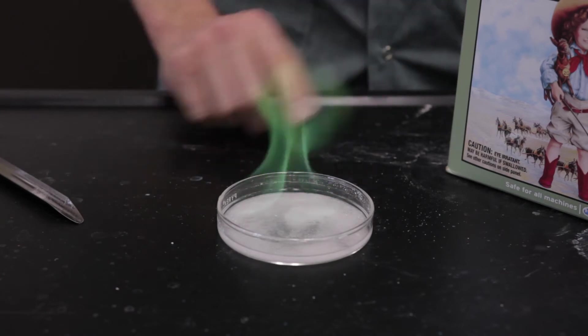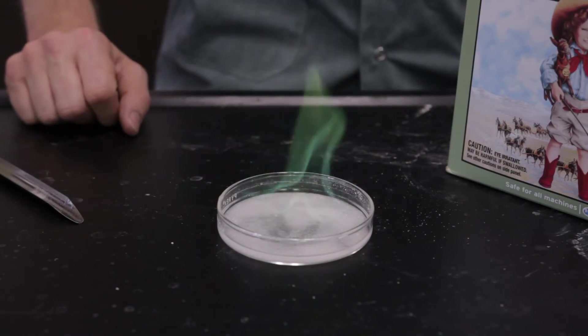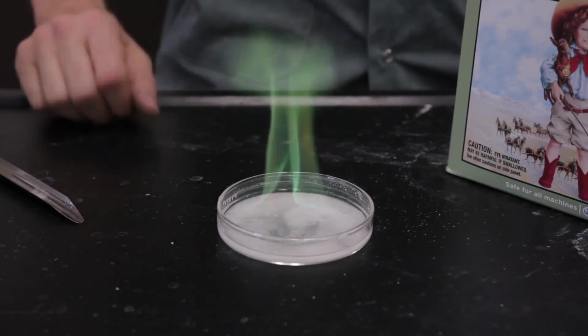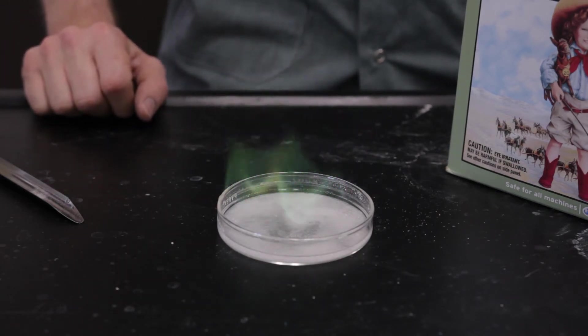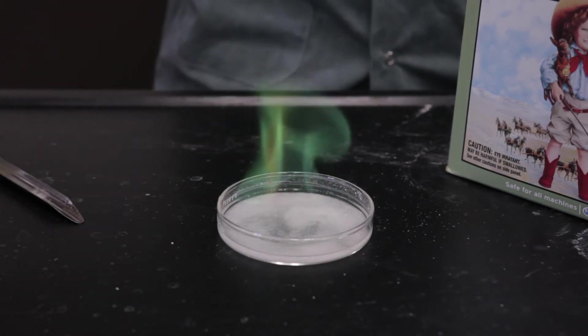So if you want to do this at home using borax and methanol or ethanol, you'll get the green flame effect. But to get a better green flame effect, only green without any sodium, we're going to be using copper sulfate.